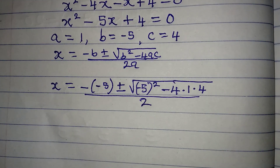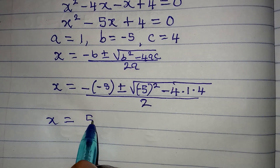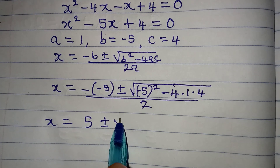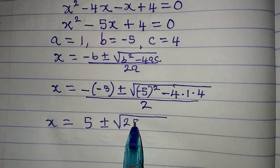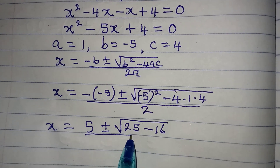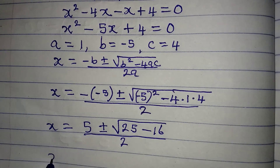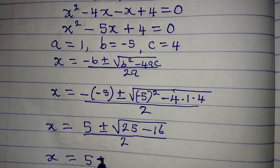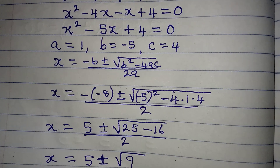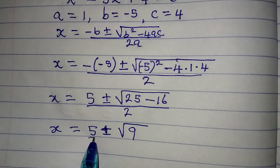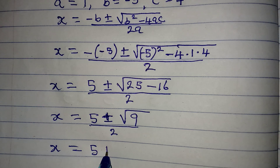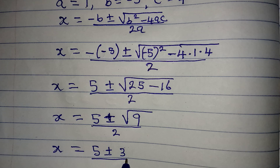Simplifying: negative of negative 5 is positive 5, plus or minus square root of 25 minus 16. So x equals 5 plus or minus square root of 9, all over 2. The square root of 9 is 3, giving x equals 5 plus or minus 3, over 2.